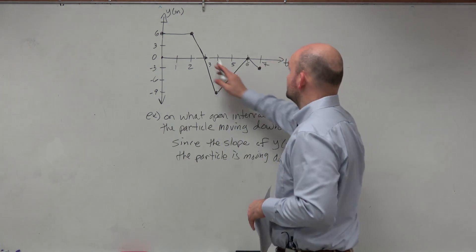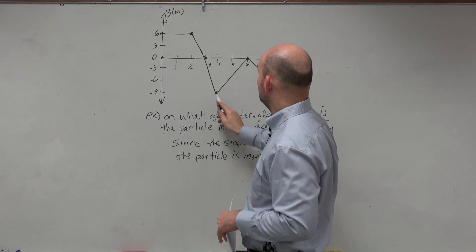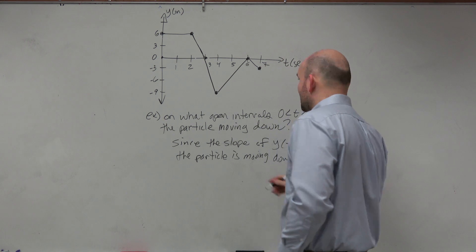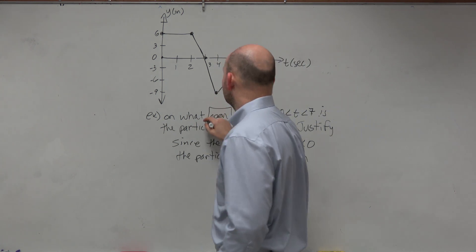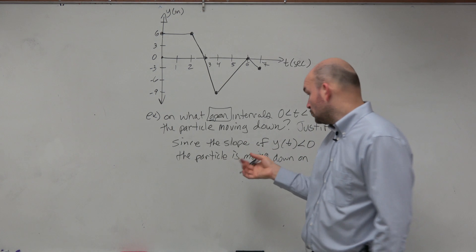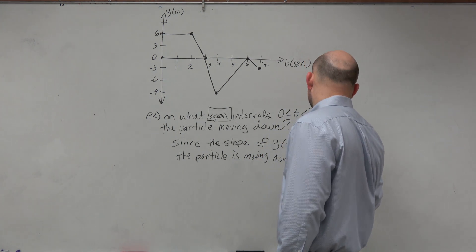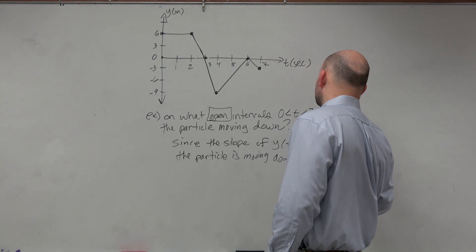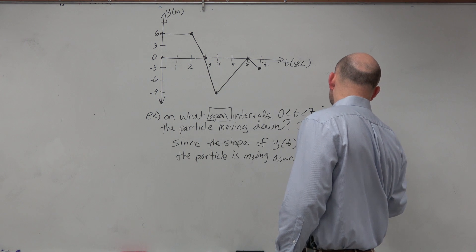Let's see, so when is it moving down? It's on the interval 2 to 4 and then 5 to 7. And then again, just make sure you represent this is an open interval, so those points actually aren't included. So we'd have 2 comma 4 union 6 comma 7.